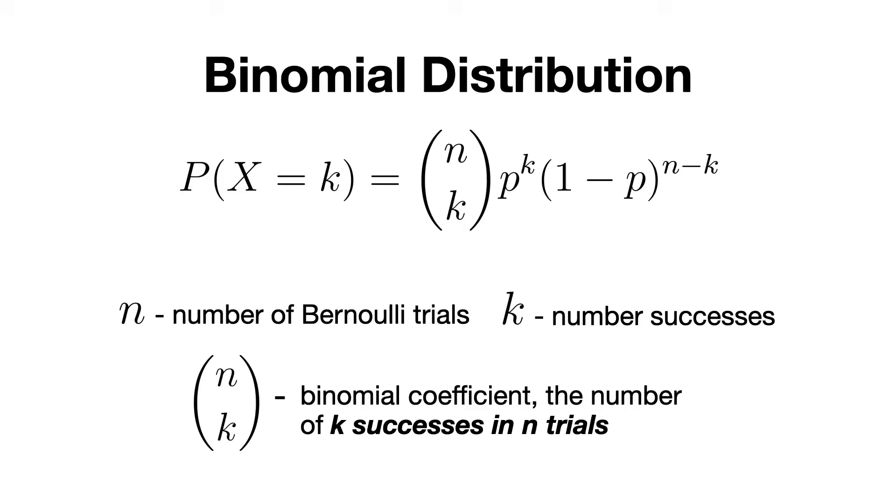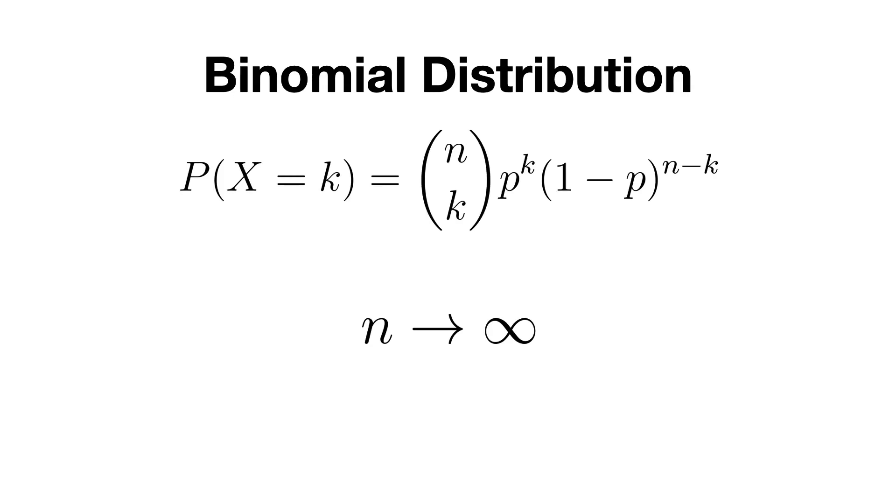The link to it is in the description below. Now, let's imagine what would happen if n becomes very large and p becomes very small, or in other terms, n tends to infinity and p tends to zero.